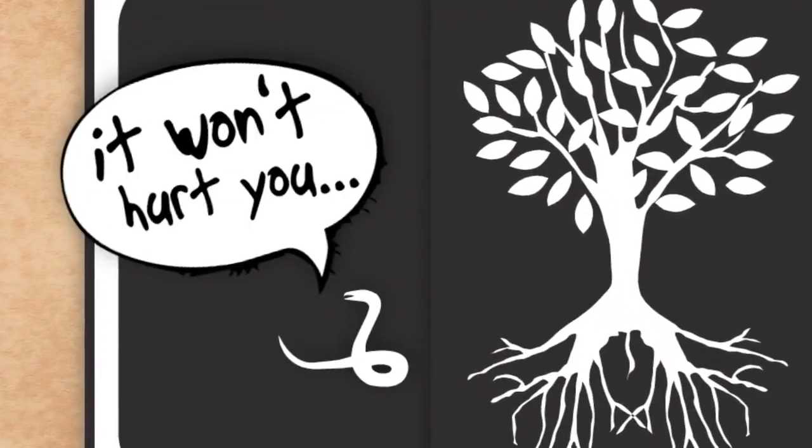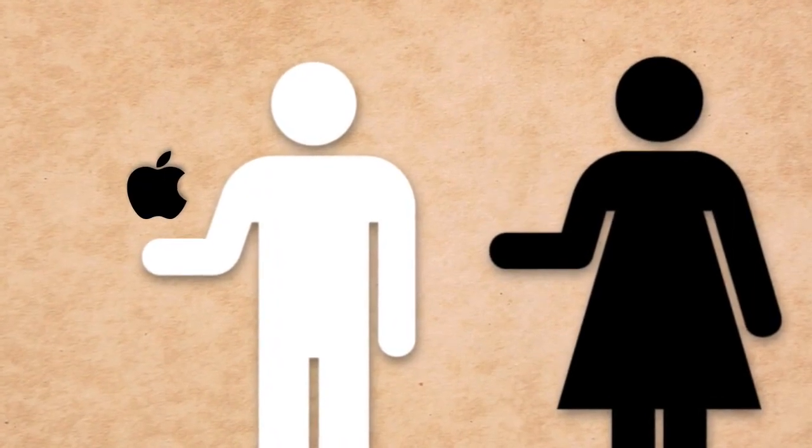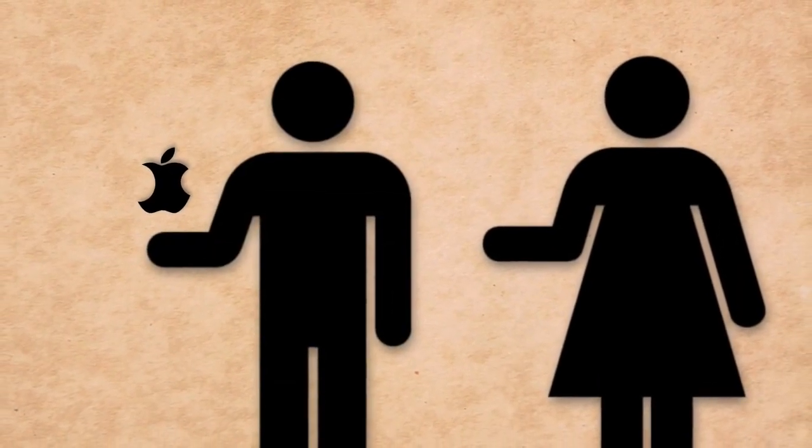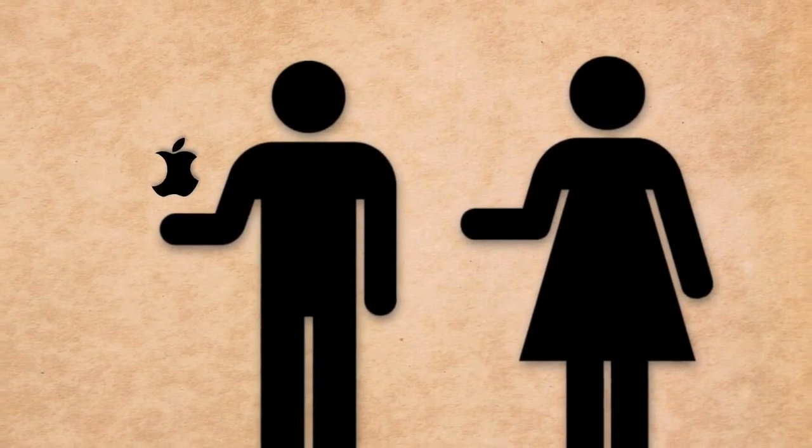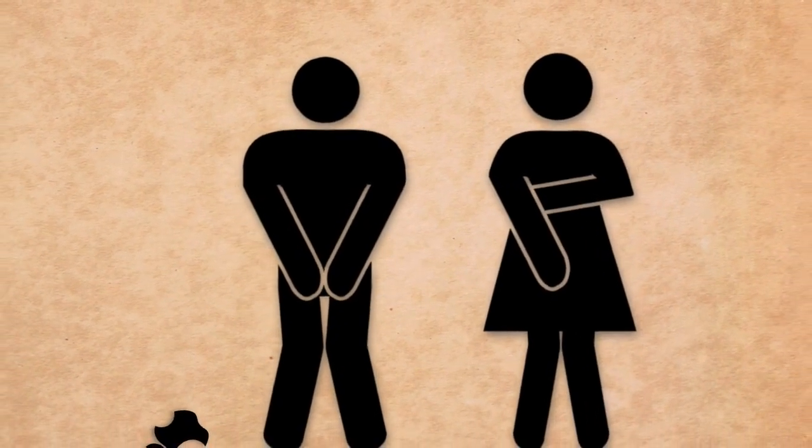Sometime later, Eve is tempted by Satan and eats from this tree, then Adam eats from it too. It is at this point that the two become aware and understand good and evil, evidenced by a new shame of their nakedness.